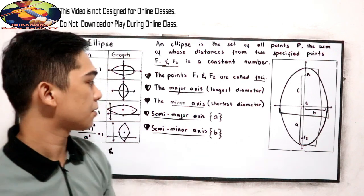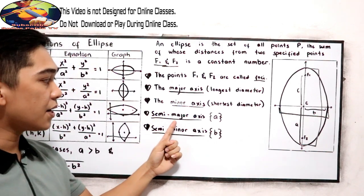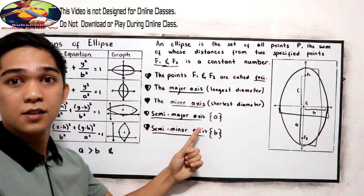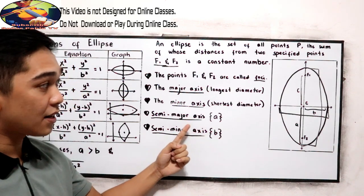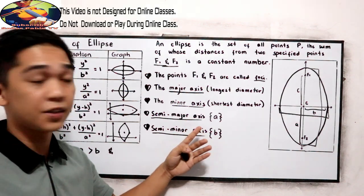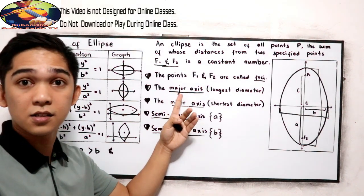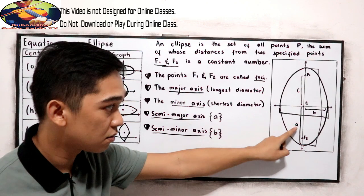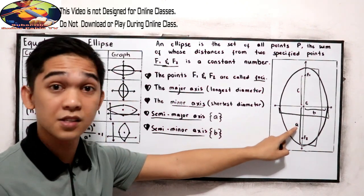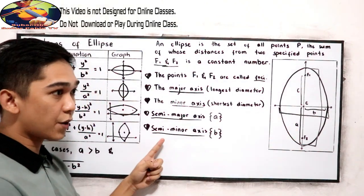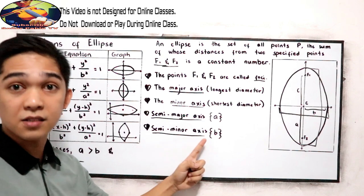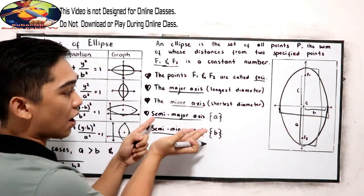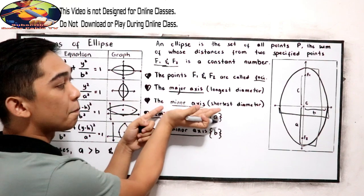We have the semi-major axis — that is half the measure of the major axis, and its measure is A. We also have the semi-minor axis, B, which is half the measurement of our minor axis.